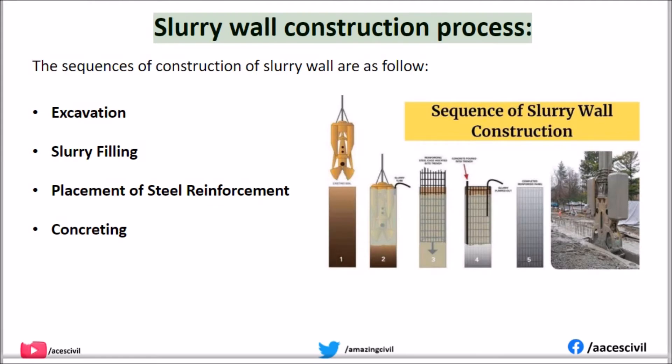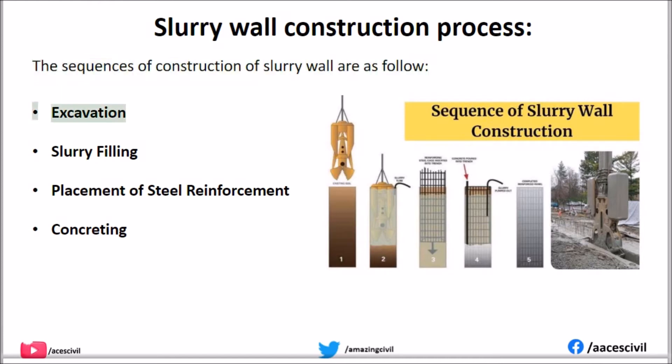The slurry wall construction process involves the following sequence of steps: excavation, slurry filling, placement of steel reinforcement, and concreting.